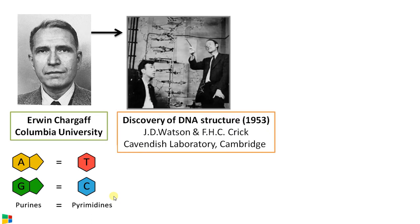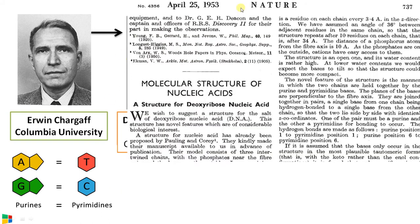This provided one of the most important clues for the discovery of DNA structure by Watson and Crick in 1953. Later they were awarded the Nobel Prize in 1962 for their discovery, along with Maurice Wilkins. In the paper published by Watson and Crick in Nature, they mentioned Chargaff's rule and how they used this data to orient the bases together in making their DNA structure.